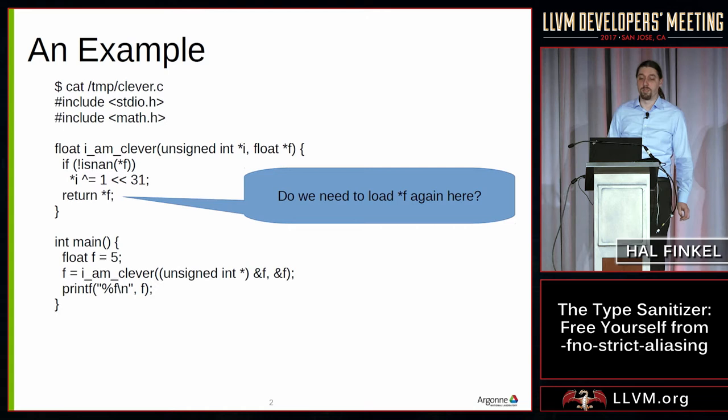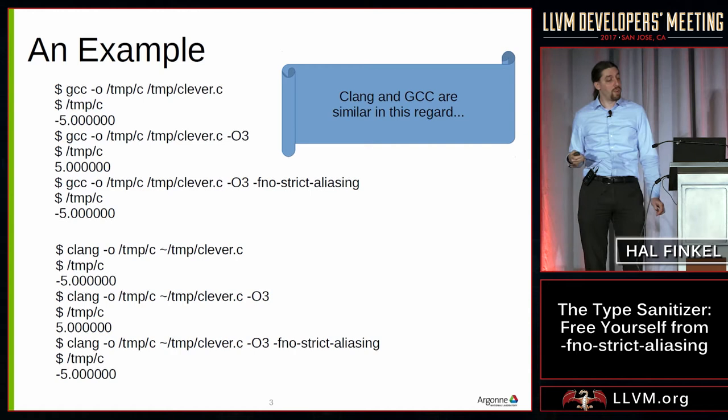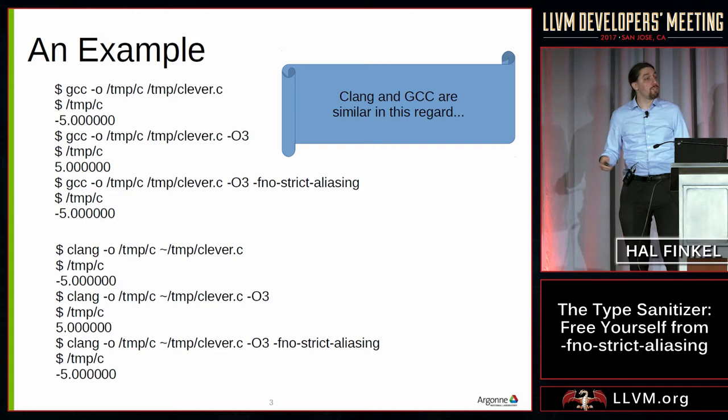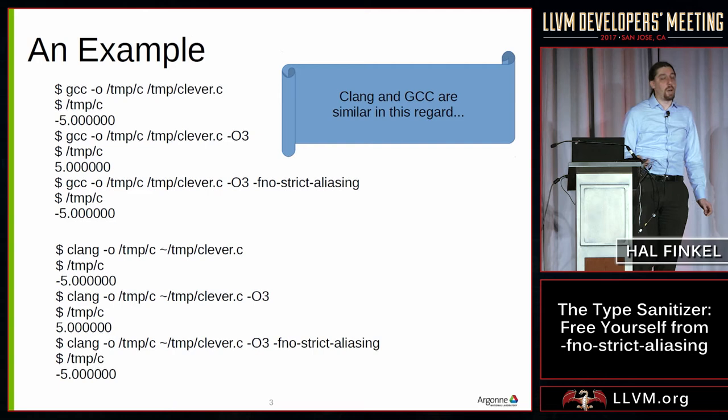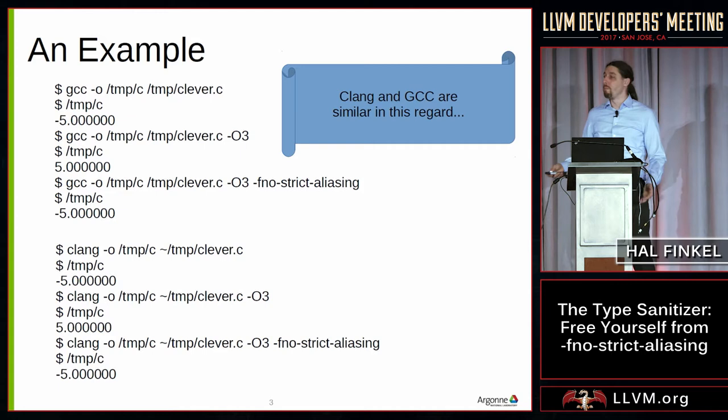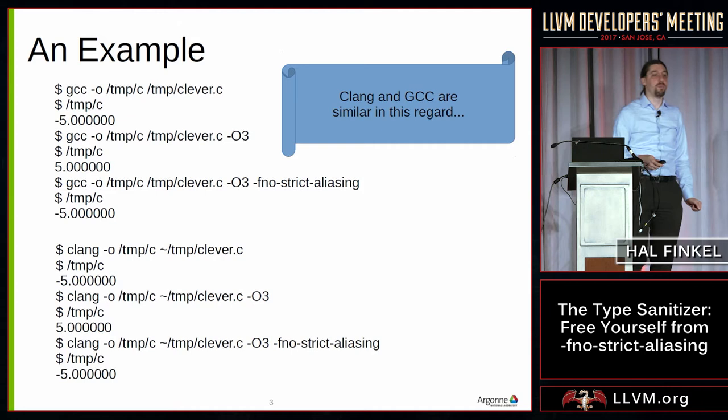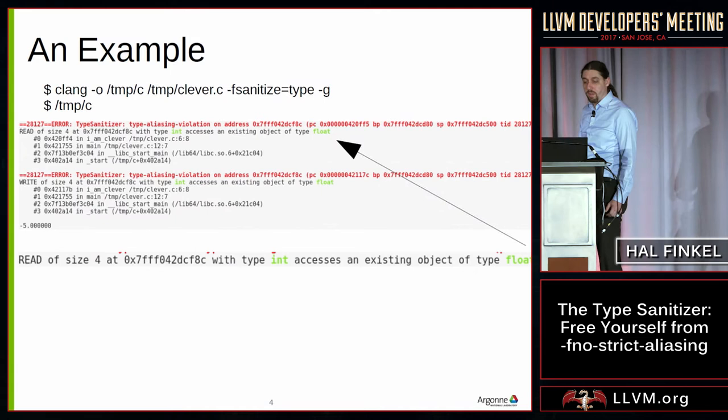When you have code like this and compile with optimizations, it may do the wrong thing. Code teams discover their code doesn't work with optimizations, or after upgrading the compiler — they find they can turn on -fno-strict-aliasing and get the right answers again, and they move on. But the problem is we don't have any good way of pointing them to where the problem is in their code. This is what I'd like to try and solve.